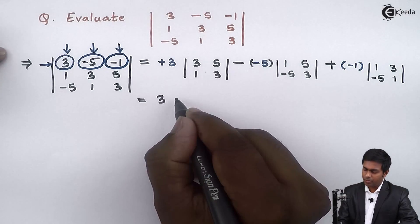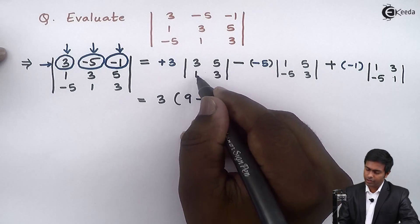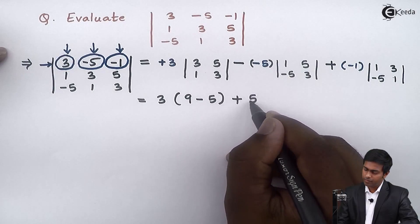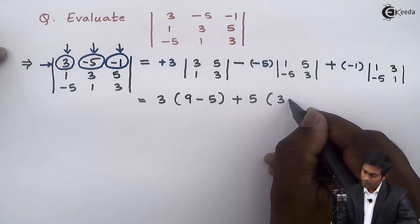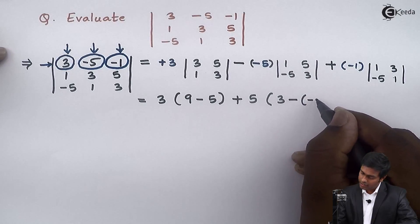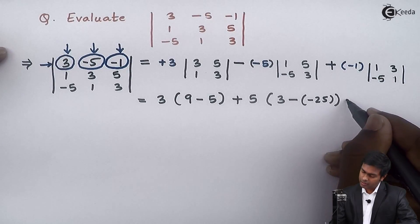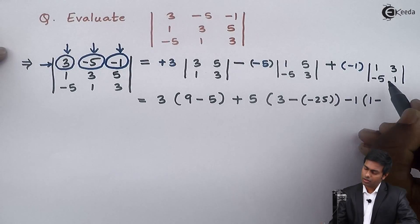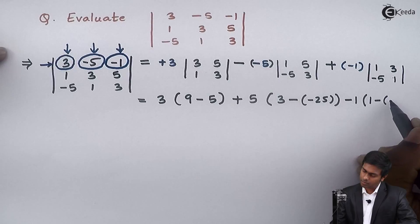So plus 3 times (3×3 − 5×1) = plus 3 times (9 − 5). Next, minus minus plus 5 times (3×1 − 5×(−5)) = plus 5 times (3 − (−25)) = plus 5 times (3 + 25). Then plus minus, that is minus 1 times (1×1 − 3×(−5)) = minus 1 times (1 − (−15)) = minus 1 times (1 + 15).